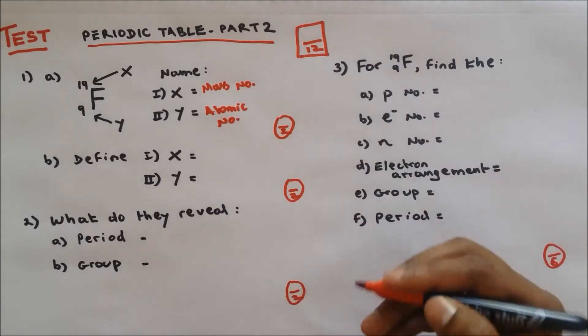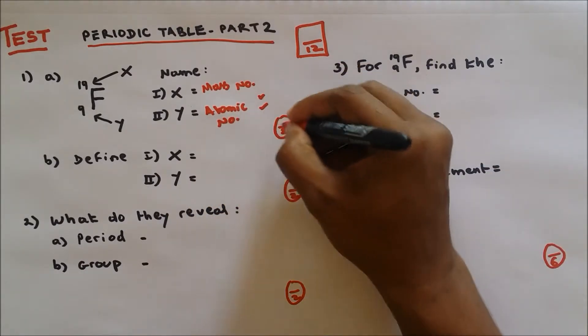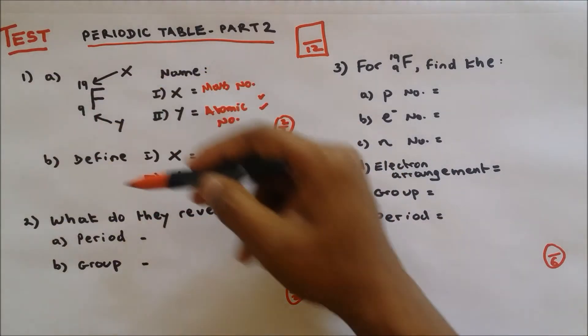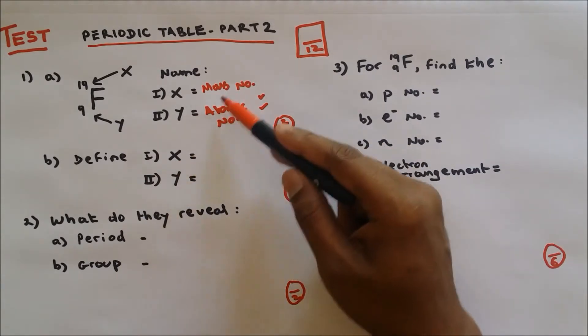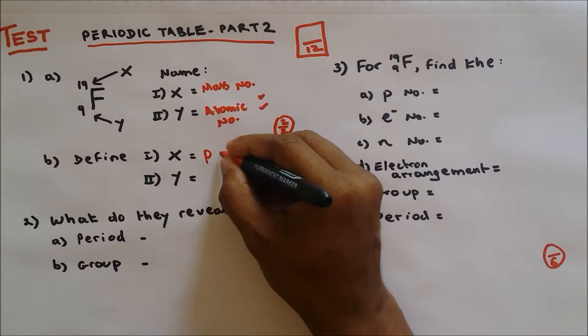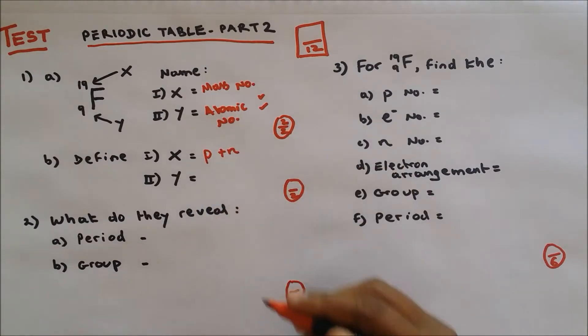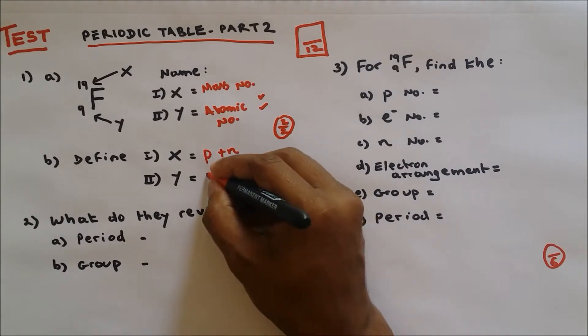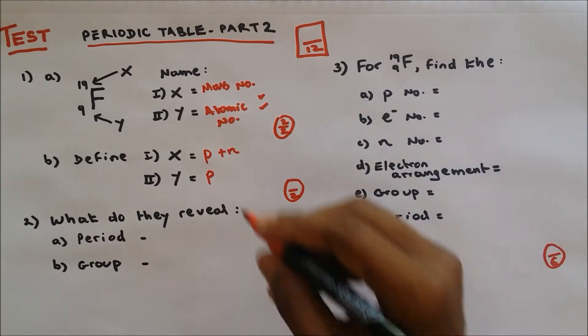Question number one part b, define X which is mass number. What is mass number? It's the number of protons and neutrons. Define Y which is atomic number. What is atomic number? The number of protons, or yes, the number of electrons. Two out of two.